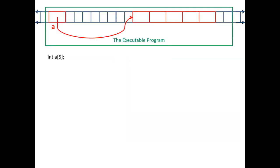We've talked about arrays over and over. We want to understand what arrays are. So this is essentially what an array is when you write 'int a[5]'. This is what happens in your program — your executable is the green area, your main, the program that is on the hard drive and then gets loaded by the operating system and runs.